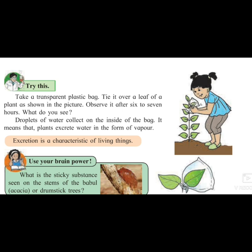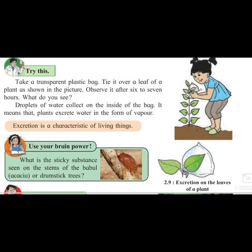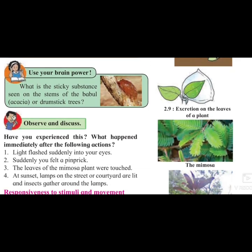We have now studied two characteristics and previously we studied one. So growth, respiration, and excretion are the three characteristics which we have studied. What is the sticky substance seen on the stems of babul — that is acacia — and drumstick trees? If you see this plant, something sticky is coming out above it. That sticky substance is also one form of excreta which has been released out.